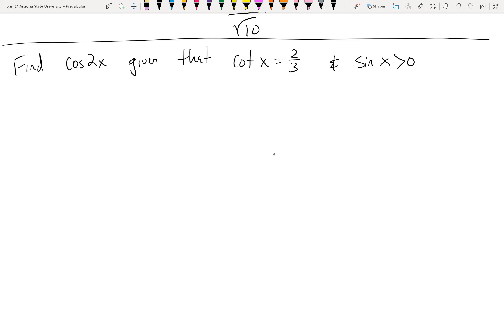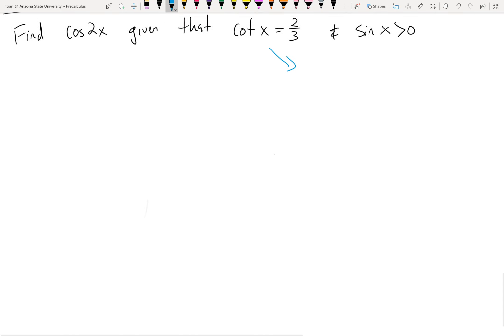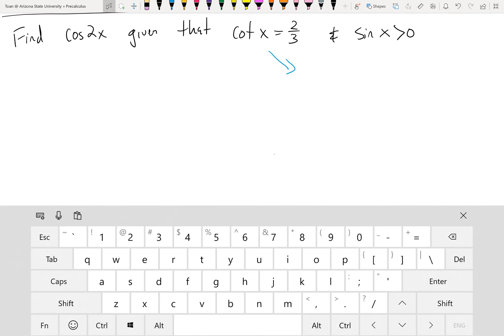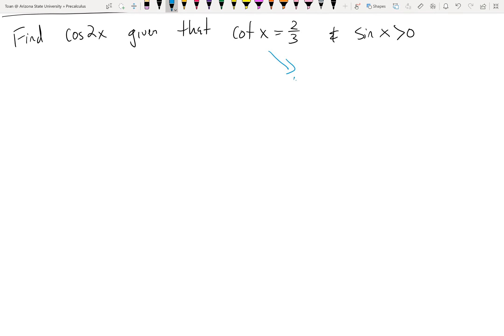So let's see here. Notice it says cotangent is positive two-thirds. I don't like to deal with the reciprocal functions; I like to deal with the basic functions, the regular functions. So I know that tangent is positive, and this guy here says sine is positive.